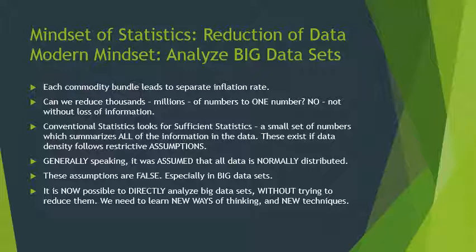In the context of inflation, each bundle of commodities leads to a separate inflation rate, and every household purchases a different bundle, so there are actually millions of inflation rates — every household has its own. The question is: can we reduce all of this data into one number? The answer is no. We cannot reduce all of this data to one number without serious loss of information, so it is not a useful idea to think of one inflation rate for the whole population.